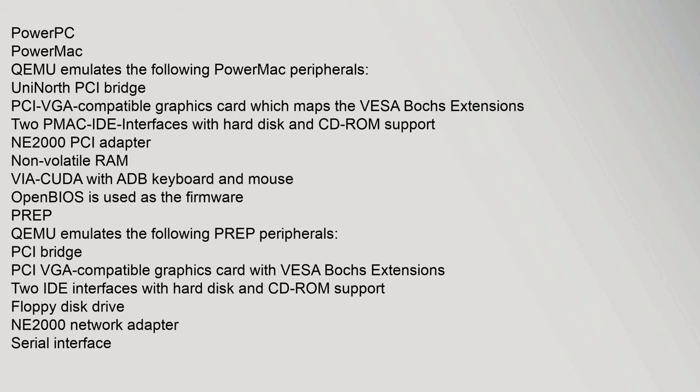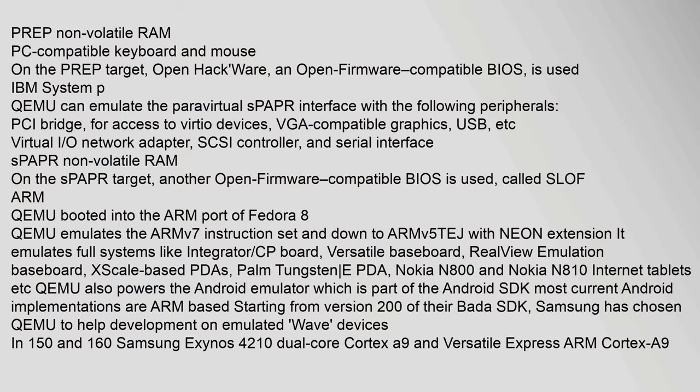QEMU emulates the following PowerMac peripherals: UniNorth PCI bridge, PCI VGA-compatible graphics card (mapping the VBE extensions), PMac-IDE interfaces with hard disk and CD-ROM support, NE2000 PCI adapter, non-volatile RAM, and PCI/PC-compatible keyboard and mouse. On the PReP target, QEMU emulates: PCI bridge, PCI VGA-compatible graphics card with VBE extensions, two IDE interfaces with hard disk and CD-ROM support, floppy disk drive, NE2000 network adapter, serial interface, PReP non-volatile RAM, and PC-compatible keyboard and mouse. On both PReP and PowerMac targets, an OpenHackware/Open Firmware-compatible BIOS is used.